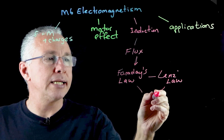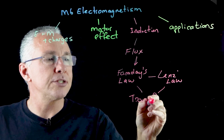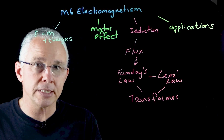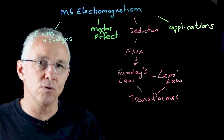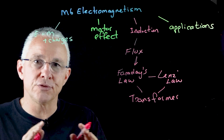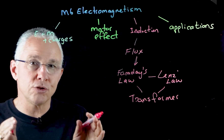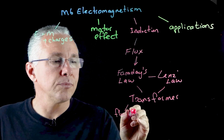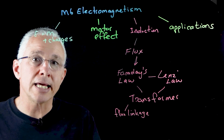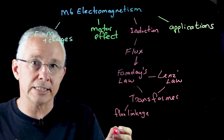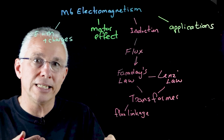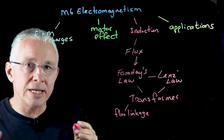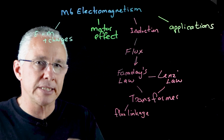We then look at a key application: the transformer. You need to understand the structure and components of a transformer, and how Faraday's law and Lenz's law apply to it. Transformers are generally described as ideal — power in equals power out — but that's not true in reality. You also need to understand that transformers can be inefficient, which brings in the concept of incomplete flux linkage. The structure of the transformer is designed to increase flux linkage, however it also leads to the production of eddy currents, which represent another form of energy loss in the system.